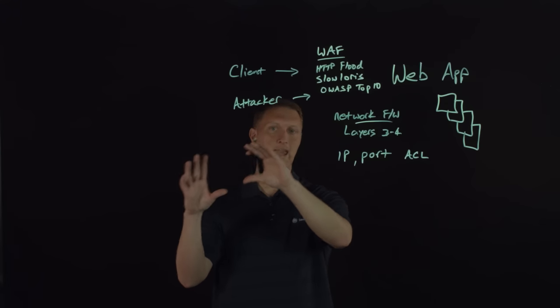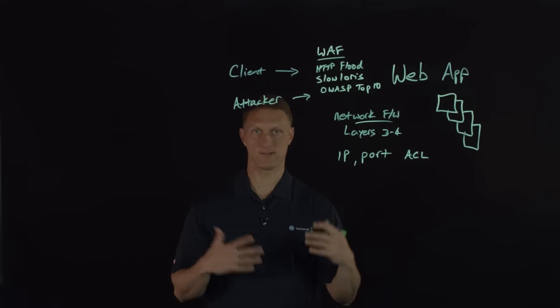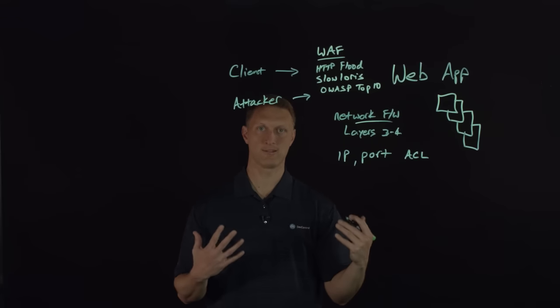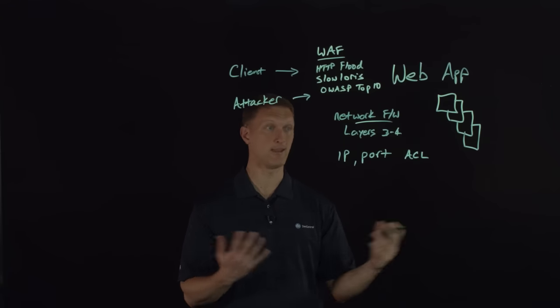One other thing to mention: the HTTP protocol that web applications live and die by was never really designed for the complex web applications we have today. While you might say let's handle this at the HTTP protocol level, unfortunately HTTP when it was designed was not built with these complex applications in mind. So there are fundamental protocol-level vulnerabilities and weaknesses that can be exploited. That's where a web application firewall can come in and say: as a legitimate HTTP request comes into my web application, I'm going to inspect it, make sure it's not an injection attack, not a cross-site scripting attack, not an HTTP flood or slow loris. If it is, I'm going to block it right here at the WAF. If it passes all these checks, I'll let the request through to the web application.